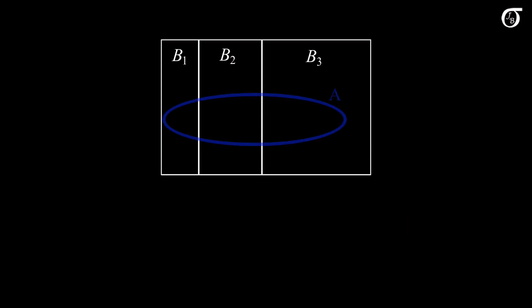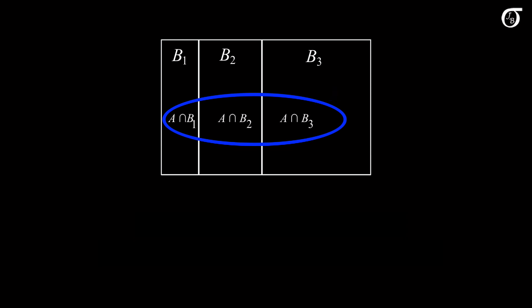Now suppose we have another event A in this sample space, here represented by the blue ellipse. Note that the entirety of A is made up of its intersection with the B's. A is equal to the union of these three intersections, and that would be true of any event A, whatever A happens to be, since B1, B2, and B3 make up the entire sample space.